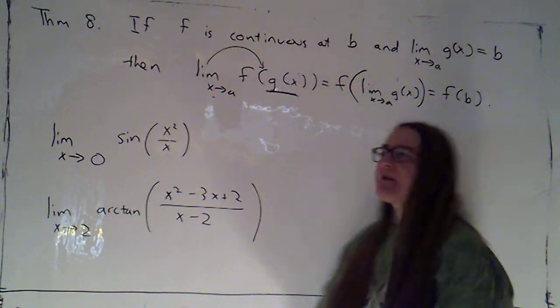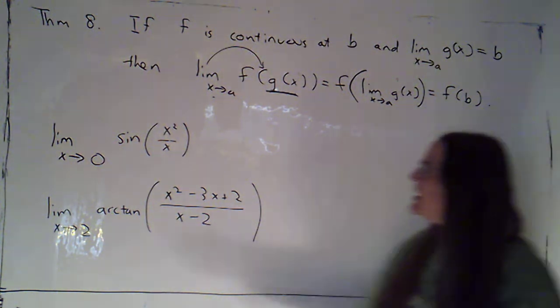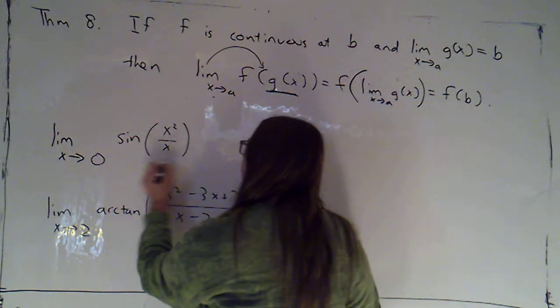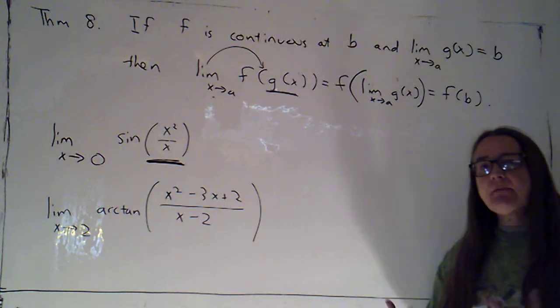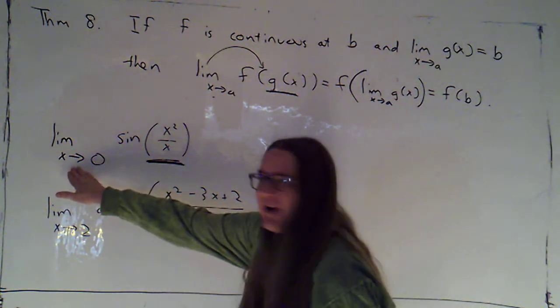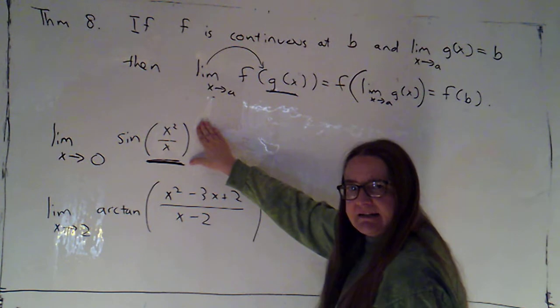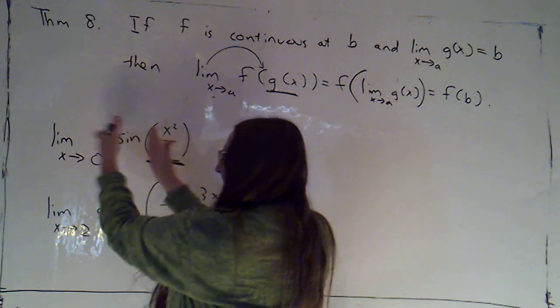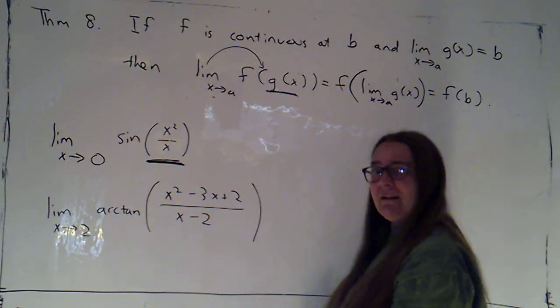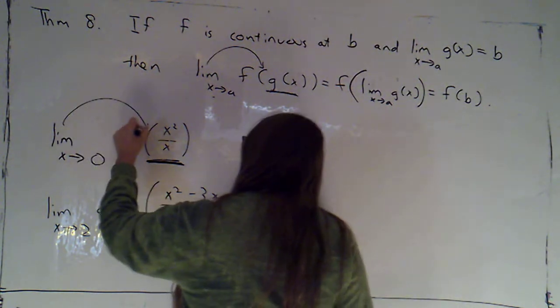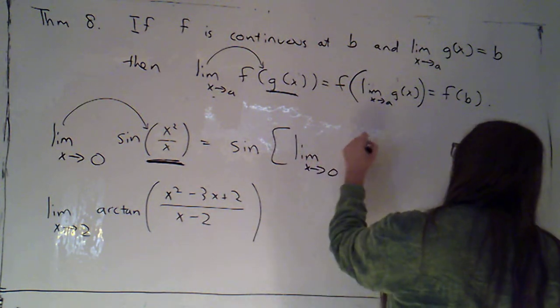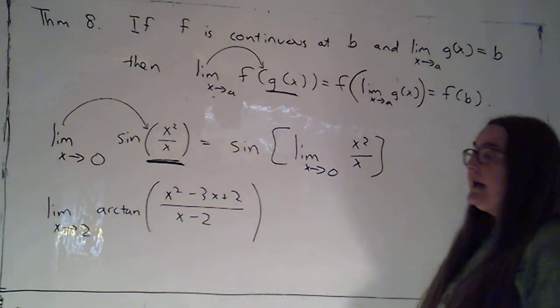So I've got two examples up on the board for us to see how this works. I've got the limit as x goes to zero of sine of x squared over x. So here, x squared over x is my inside part that I'm plugging into sine. And I can sort of see, this is telling me where x is going. Here's where all my x's in the expression are. That sine is kind of in the middle. It's separating the thing that's telling me where x is going and the part of the expression that has x's in it. So it really is nice if I can pull that limit inside and say this is sine of the limit as x goes to zero of x squared over x.